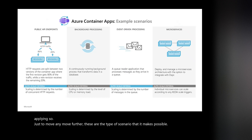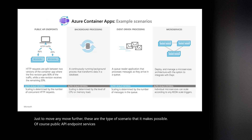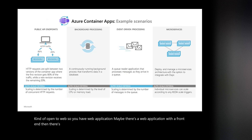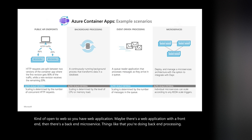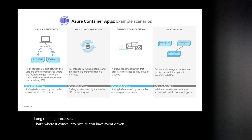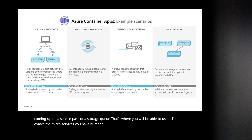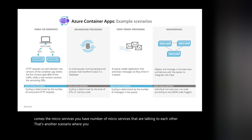Of course, public API endpoint services that are open to the web — so you have a web application, maybe there's a front-end with a back-end microservice. You're doing back-end processing, long-running processes — that's where it comes into picture. You have event-driven processing where events are coming in on a Service Bus or a storage queue. Then comes microservices — you have a number of microservices talking to each other. That's another scenario where you'll want to use Azure Container Apps.